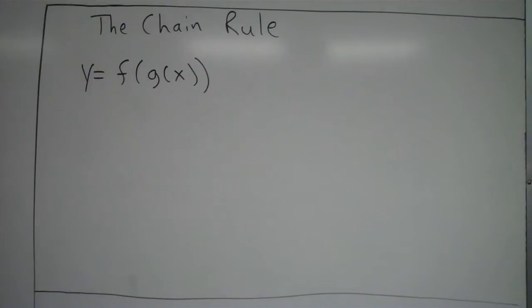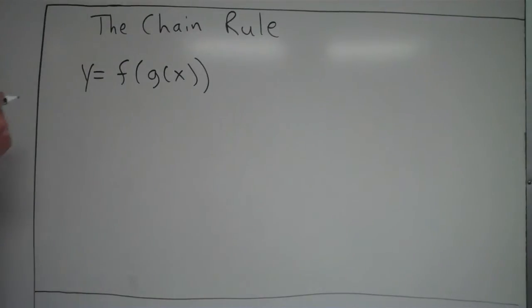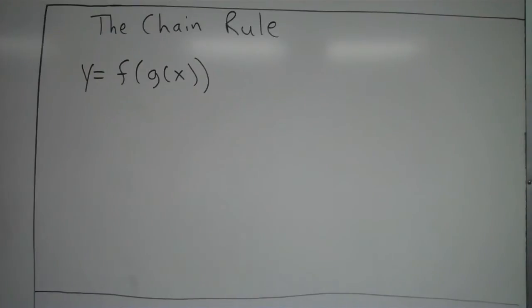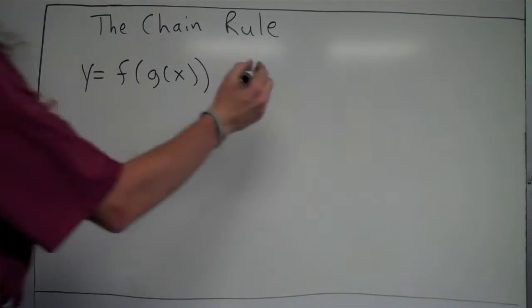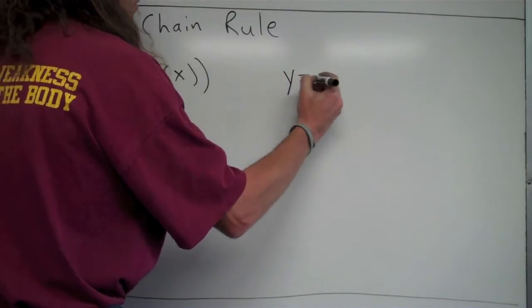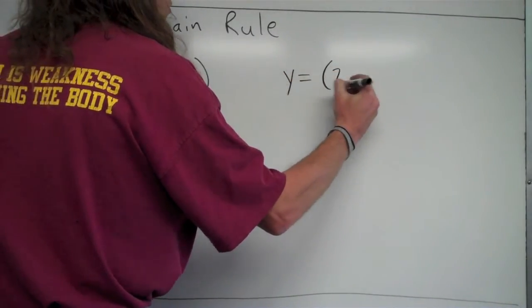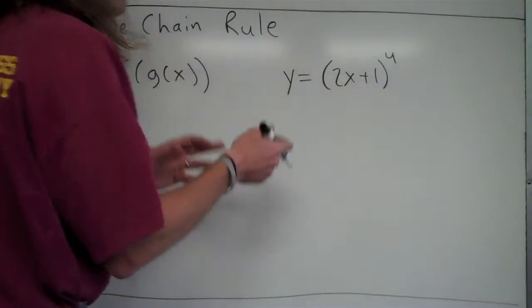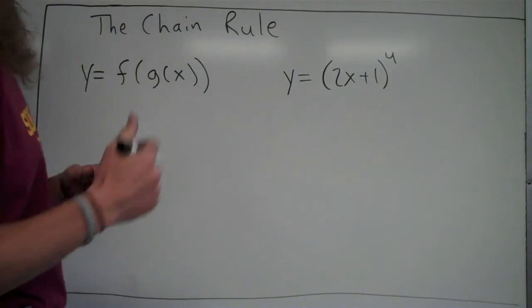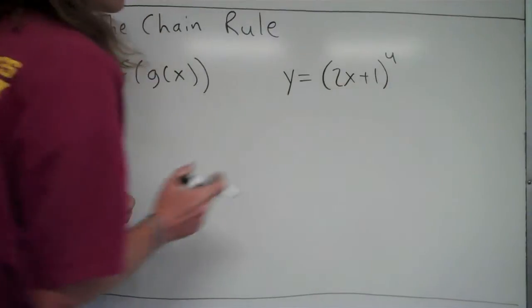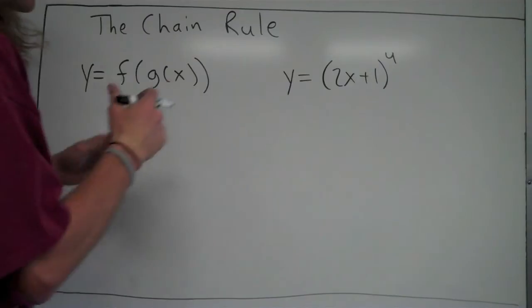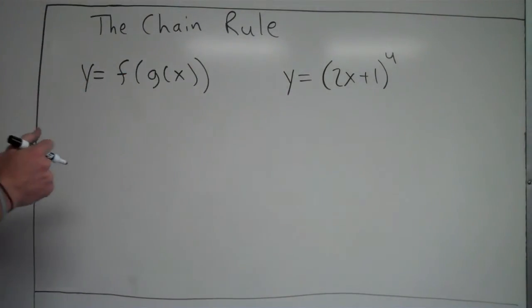Bear with me as I show what's going on here, and then we'll apply this to several examples. The chain rule works when you have an inner function that is inside something besides just x. So for example, something like 2x plus 1 to the fourth power. Up until this point, we've done stuff to the fourth power, but it's always just been x to the fourth power. So now this 2x plus 1 is an inner function inside the fourth power, and it's not just x — this is where you apply the chain rule.